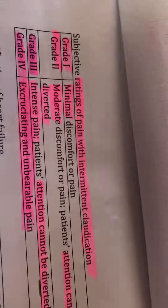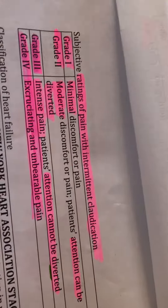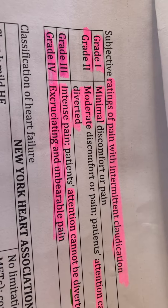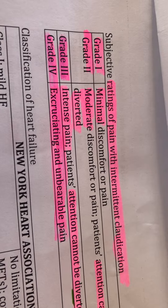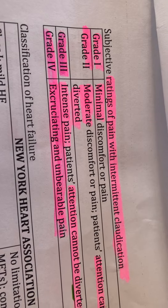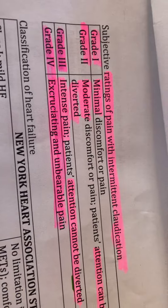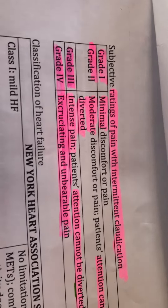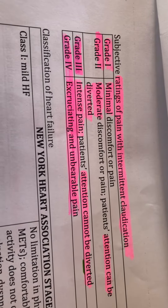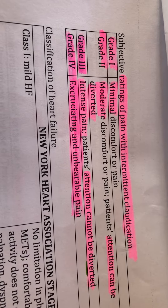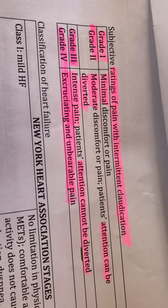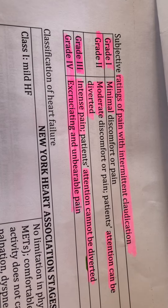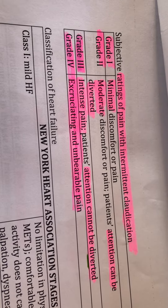Subjective rating of pain with intermittent claudication. Grade one: minimal discomfort or pain. Grade two: moderate discomfort or pain — patient attention can be diverted. Grade three: intense pain — patient attention cannot be diverted. Grade four: excruciating and unbearable pain.